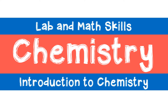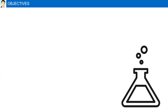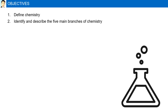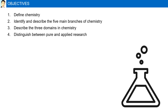Introduction to Chemistry. Objectives: Define chemistry. Identify and describe the five main branches of chemistry. Describe the three domains in chemistry. Distinguish between pure and applied research. And finally, describe how modeling is used in chemistry.